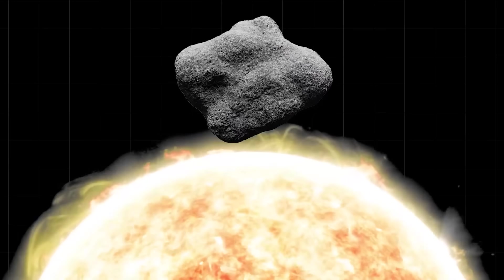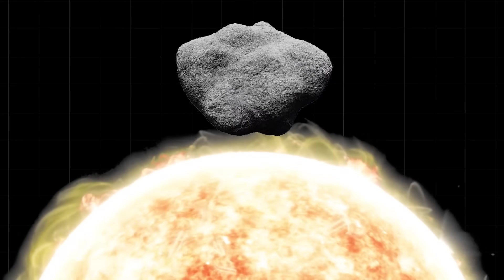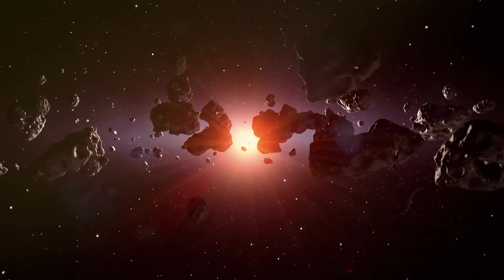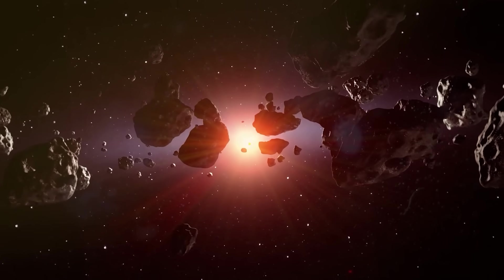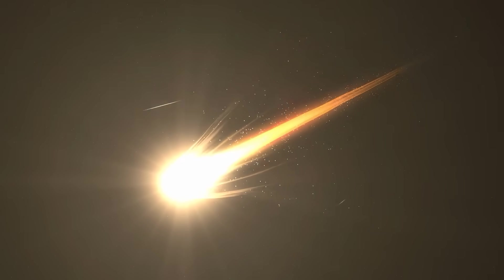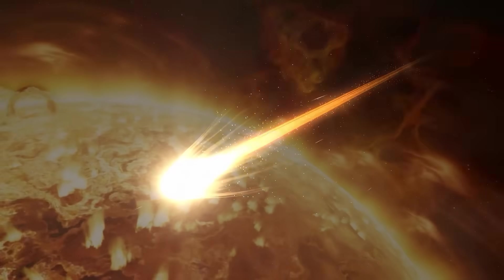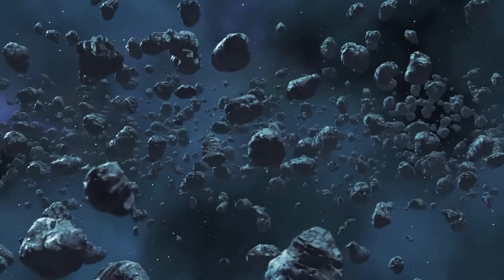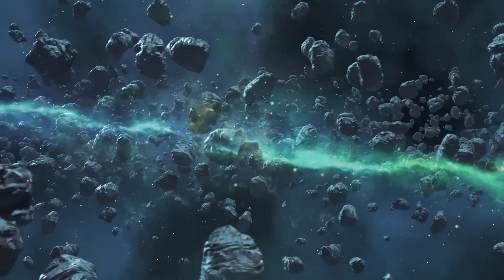However, as it drew closer to the Sun, its behavior became increasingly erratic. It brightened considerably, then unexpectedly fragmented into multiple pieces, a common fate for comets getting too close to the Sun. But even this fragmentation didn't fully explain the intense beam of light.